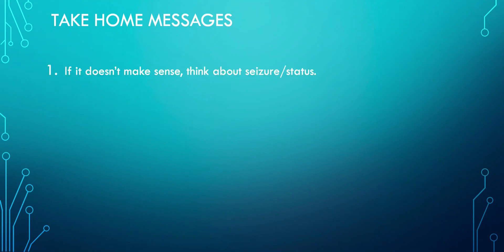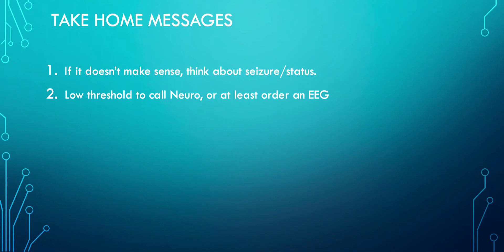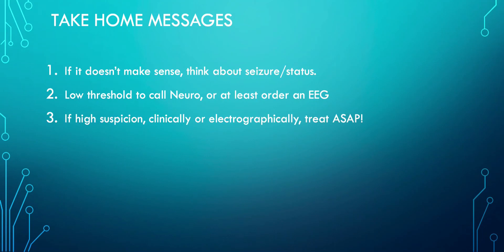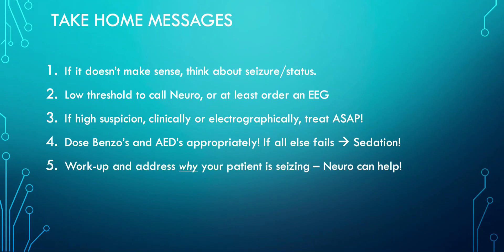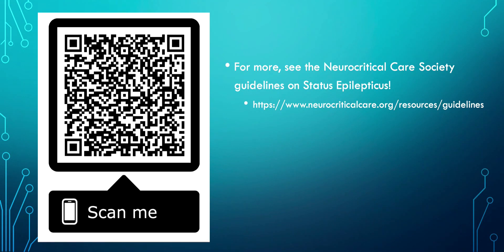Your take-home messages are: if it doesn't make sense, think about seizures. You should have a low threshold to call neurology or at least order an EEG. If you have a high suspicion for seizure — clinically or electrographically — treat it as soon as possible. Use your algorithm. Dose your benzos and AEDs appropriately. Use sedation if you need to. And call neurology to help you work out why your patient is seizing in the first place. For more information, you can point your phone at this QR code and it should download the Neurocritical Care Society guidelines for you. Thank you.